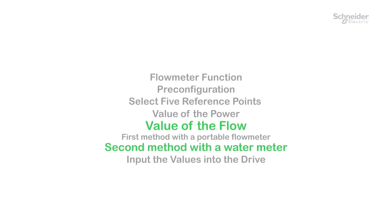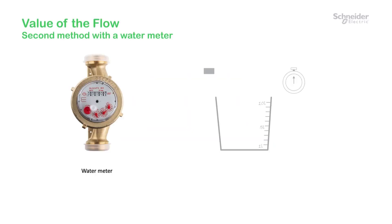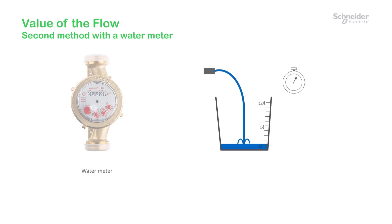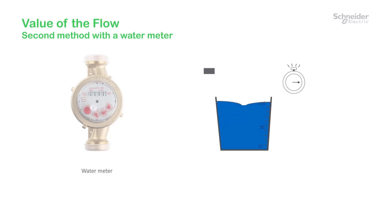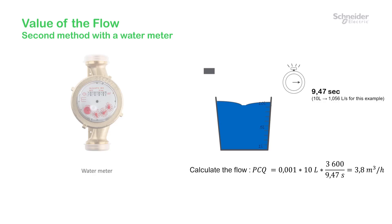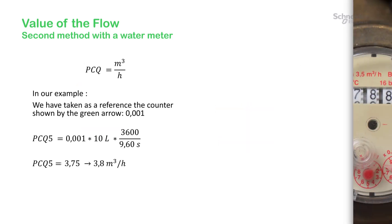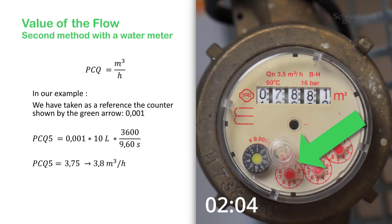Value of the Flow — Second method with the water meter: you can read the data of the water meter, or fill a 10-liter bucket or tank and clock the duration needed to fill the bucket or tank with your pump. To calculate the flow for each point, we will follow this formula.